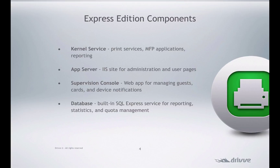The app server is the IIS site where you can go as an administrator to make changes, configure printers, configure MFPs, and change the DrivePrint system. It's also where the user can go to log in and see all their traffic, all their print history, their consumables, and all that kind of reporting information.